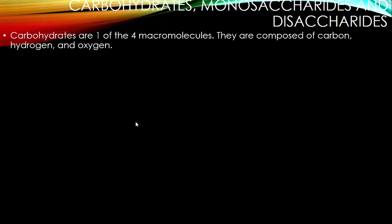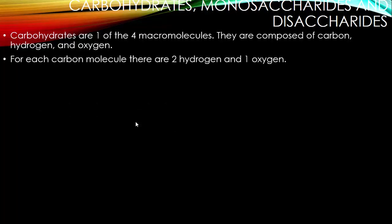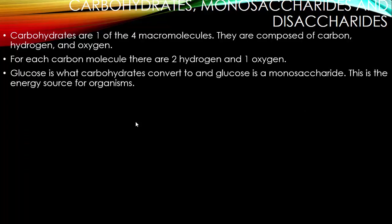The first one we're going to talk about is carbohydrates, which break down into sugars — monosaccharides and disaccharides. Carbohydrates is one of the four macromolecules. They are composed of carbon, hydrogen, and oxygen. For each carbon molecule, there are two hydrogen and one oxygen.